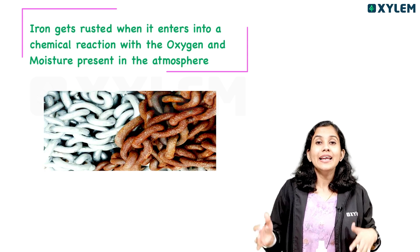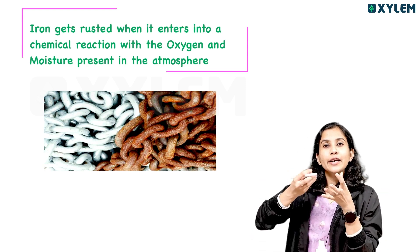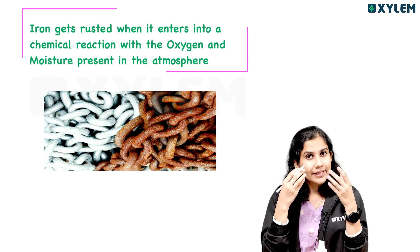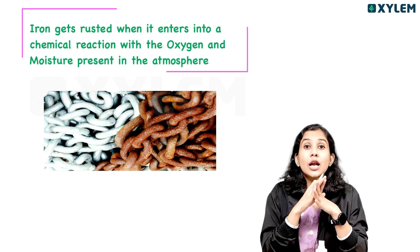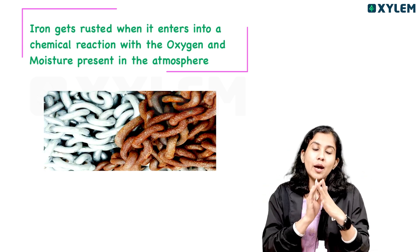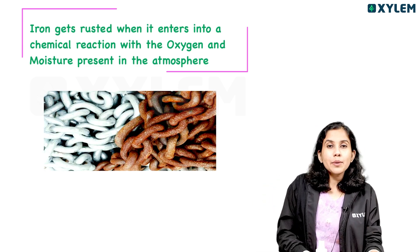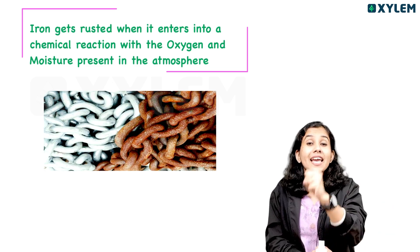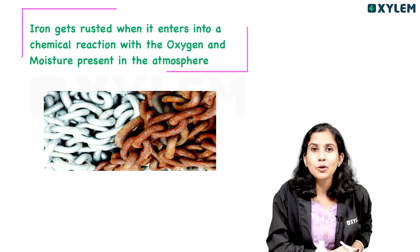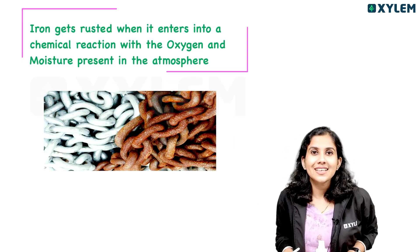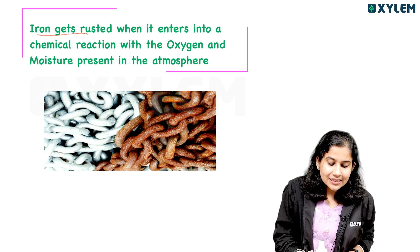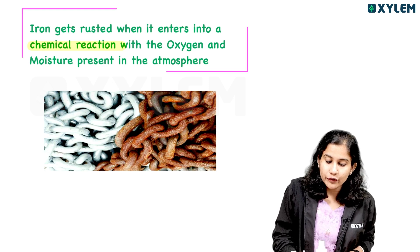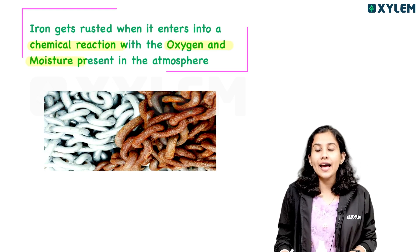What is rusting? What is the difference between a physical change and a chemical change? The iron object undergoes a lot of chemical reactions. Iron gets rusted when it enters into a chemical reaction with oxygen and moisture present in the atmosphere.